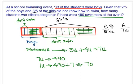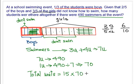In total, how many units are in the whole bar? There are 15 units altogether. Each unit represents 70 students, so 15 times 70 equals 1050. Therefore, there are a total of 1050 students — that is the answer.